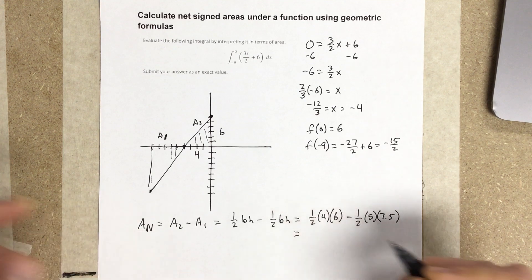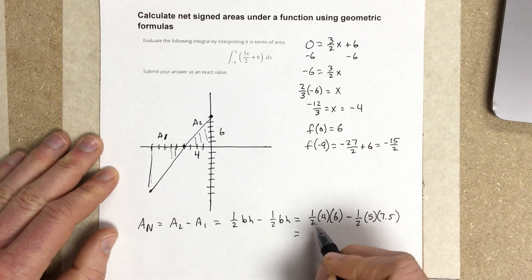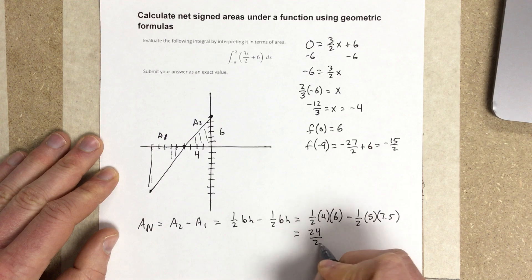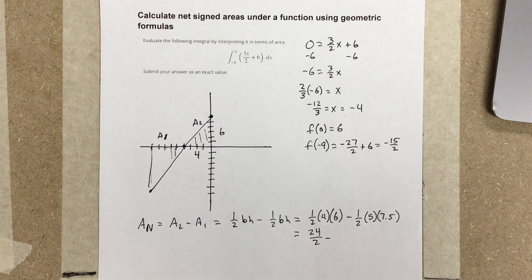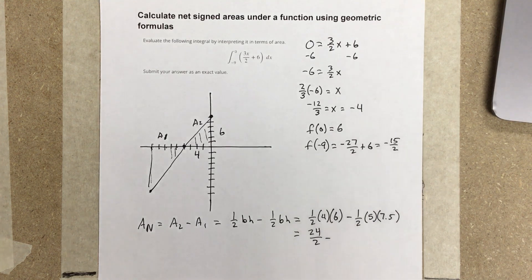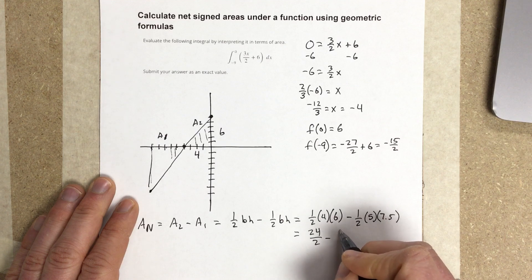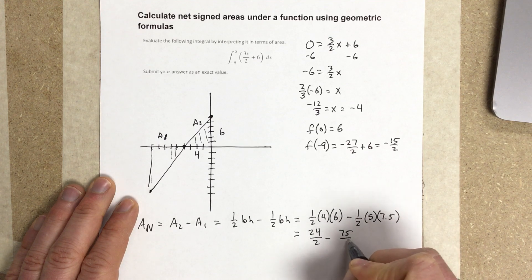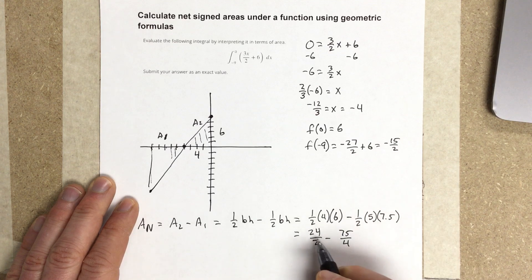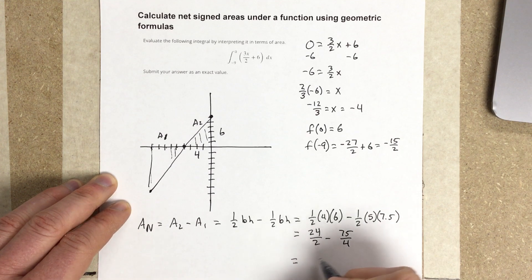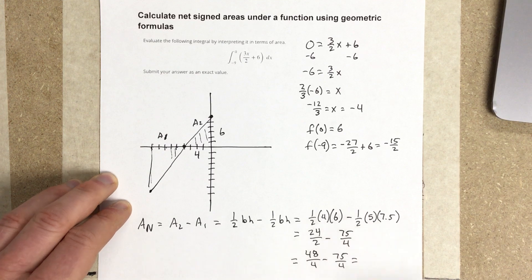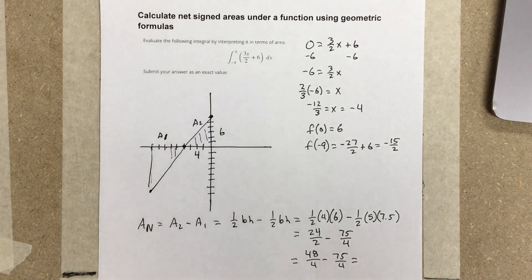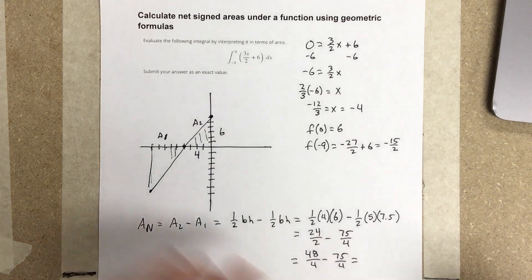And we end up with, this is 24 over 2 minus 5 times 7.5, which gives you 37.5. That fraction is 75 over 2, so I end up with minus 75 over 4. Let's multiply 24 over 2 by 2 over 2, and I end up with 48 over 4 minus 75 over 4. So 48 minus 75 is negative 27 over 4.